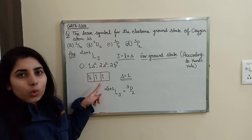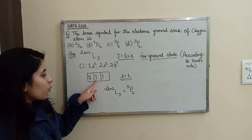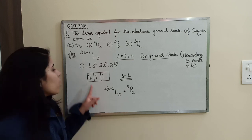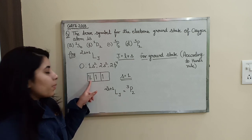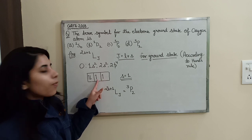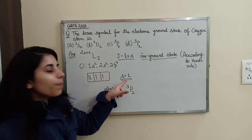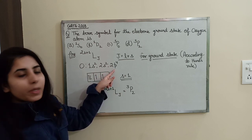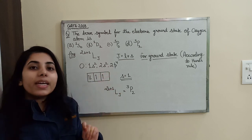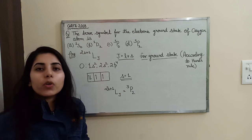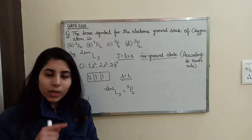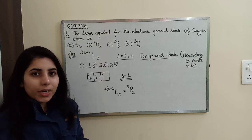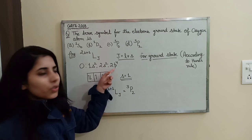The total spin you will get: one electron contributes +½ and another contributes −½, so those cancel out. But the remaining two unpaired electrons both contribute +½ each, giving a total spin S = 1. For the last orbital, which is the p orbital, the value of L will be 1 — because for s it is 0, for p it is 1, for d it is 2, for f it is 3.